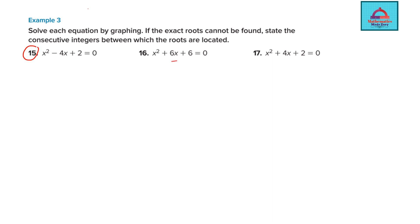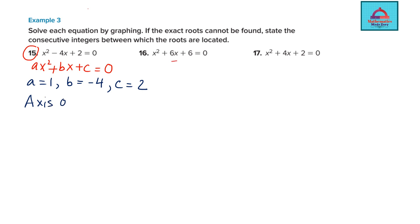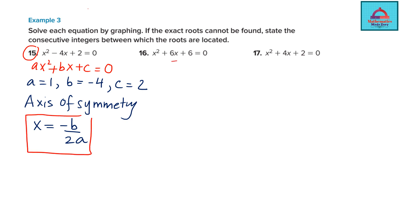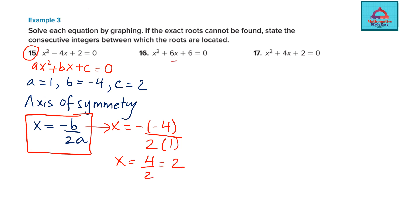We begin with question 15. Compare with the standard form ax² + bx + c = 0. So a = 1, b = -4, and c = 2. To find the axis of symmetry we use the vertex formula x = -b/2a. Plugging in: x = -(-4) / (2×1) = 4/2 = 2. So x = 2.